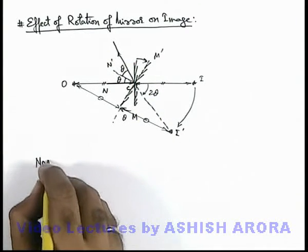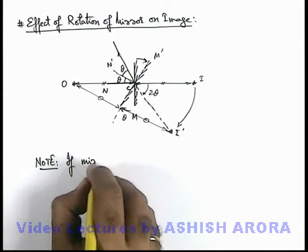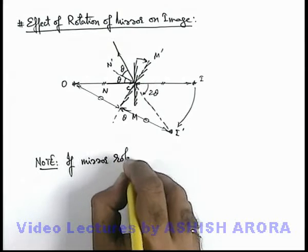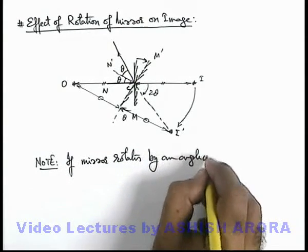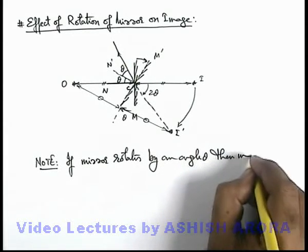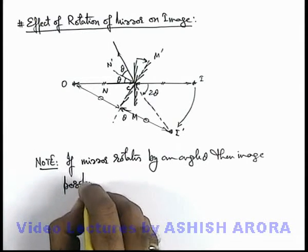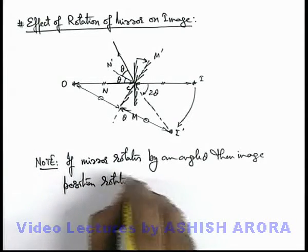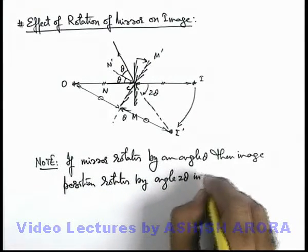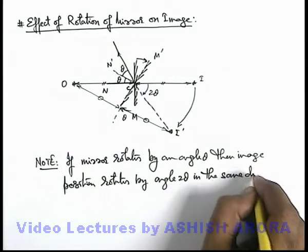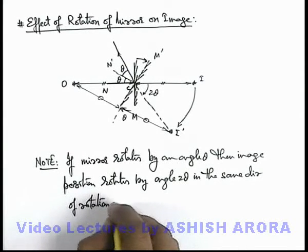So here we can write down a note that if mirror rotates by an angle theta, then image position rotates by angle 2 theta in the same direction of rotation of mirror.